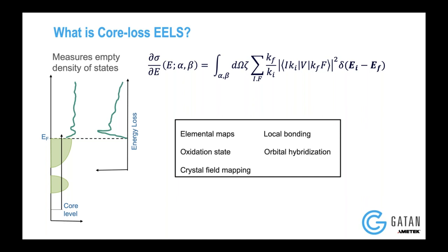You can do various types of things with this electron energy loss spectroscopy: you can measure elemental maps, oxidation state, local bonding, orbital hybridization, and crystal field mapping. Most of these applications were restricted to elemental maps before the direct electron detectors, because almost all the effects — apart from maybe the oxidation state — are very sensitive to the amount of noise in your spectrometer. That's where K3 was a very important development that happened, and it actually opened up the space even in core loss EELS.